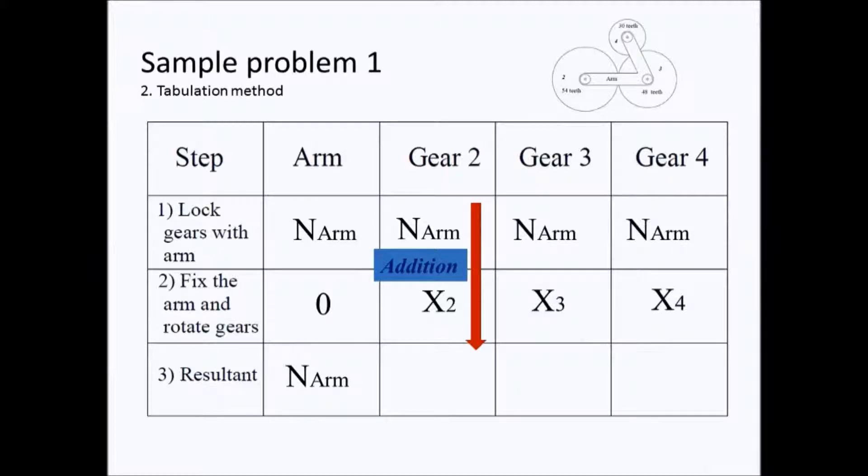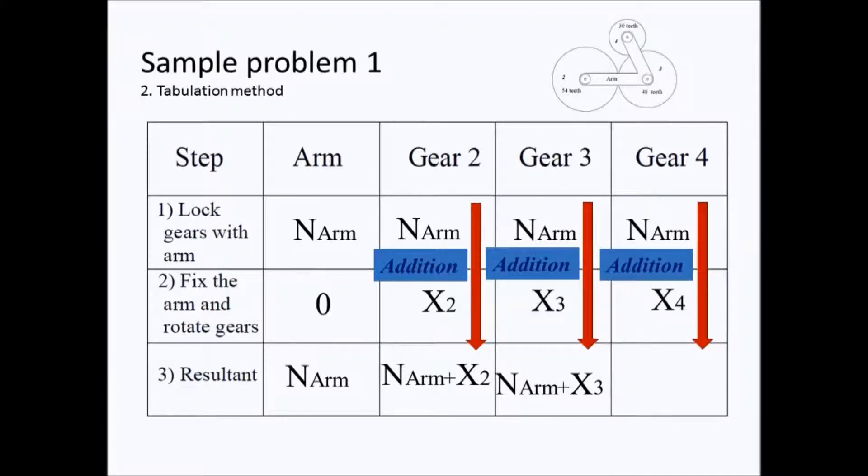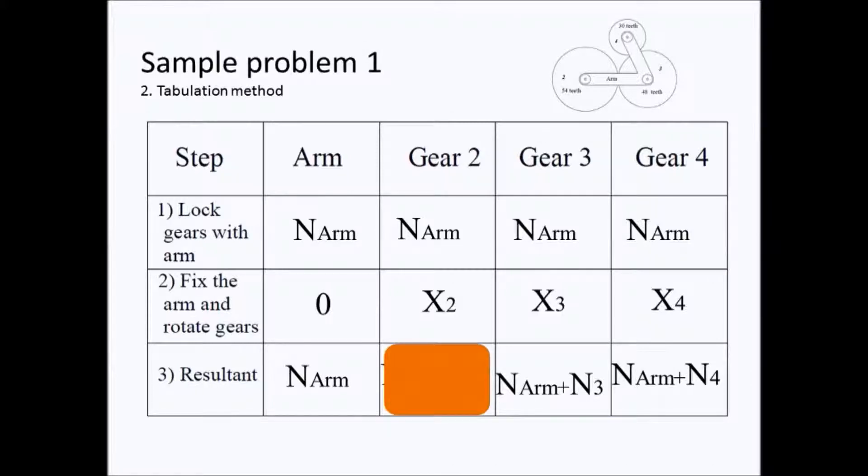The same is true for the column for gear two and gear three and gear four. And we will have the values as the answers or the solutions to our problem of the epicyclic train. We will have similar demonstrations of this later in the next problems.